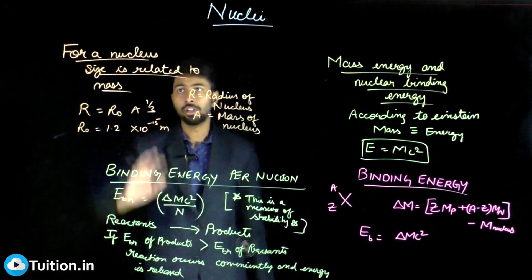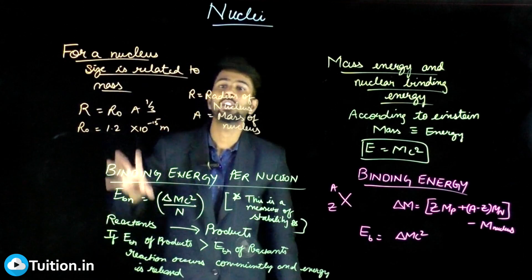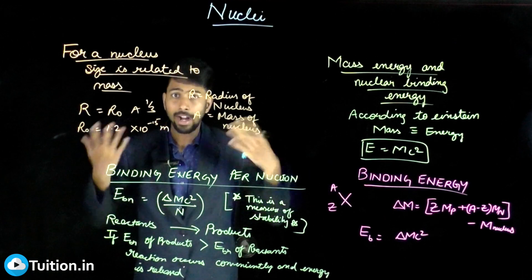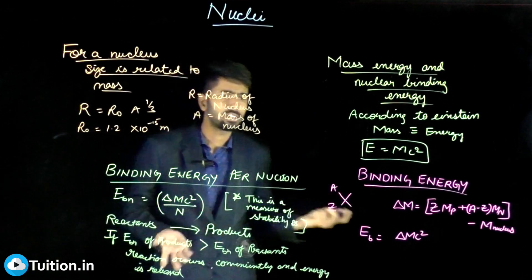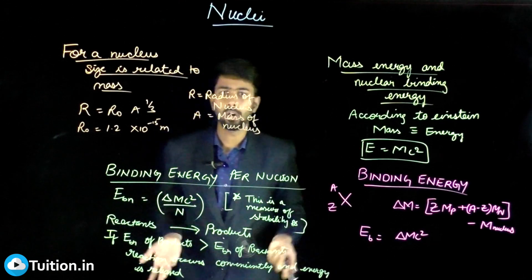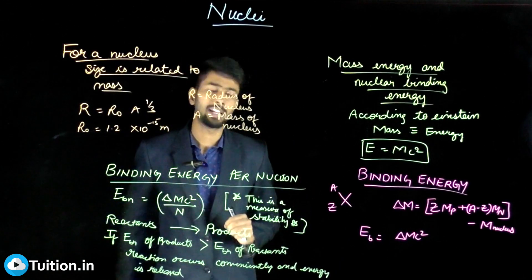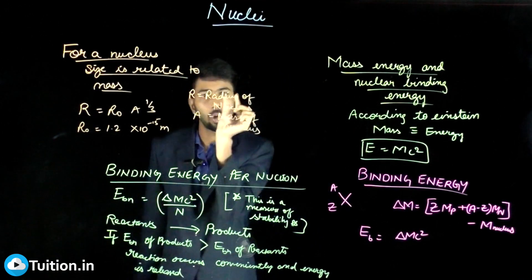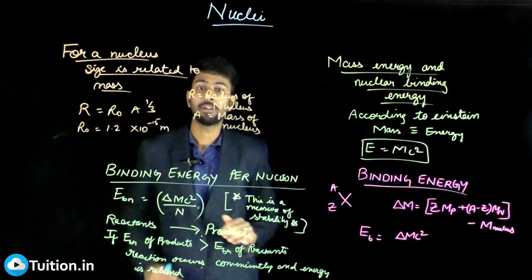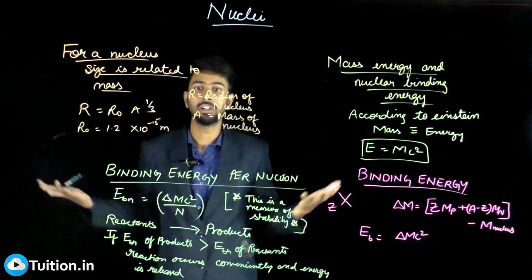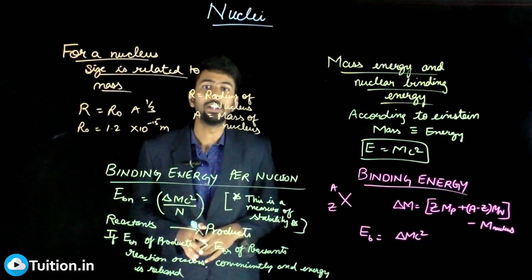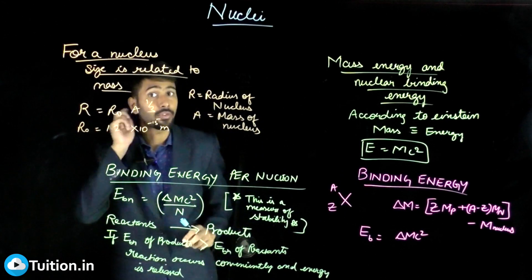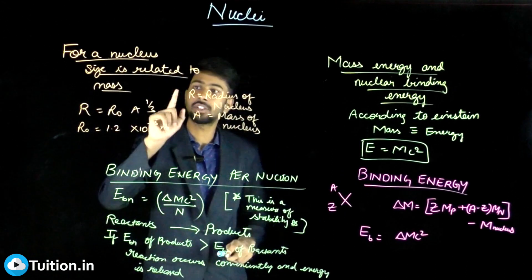First, we have to understand that for a nucleus, its size is related to mass. Greater the mass of the nucleus, greater is its size. For other bodies that we know, this is not always the case. You can have a very heavy iron ball with a very small size, and a very big thermocol box with a very large size but light in weight. So weight and size do not have a direct relation for other bodies, but for a nucleus, its size depends only on its mass.